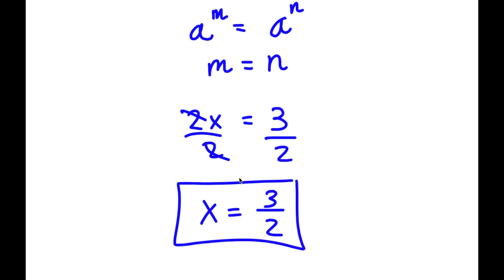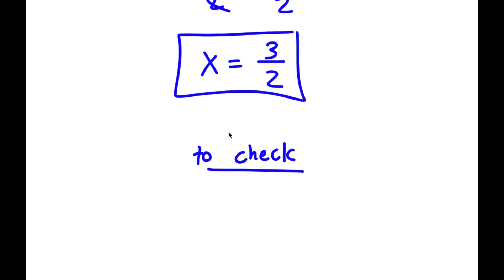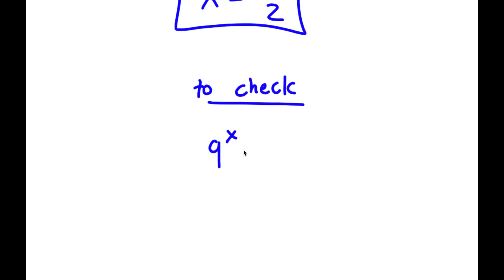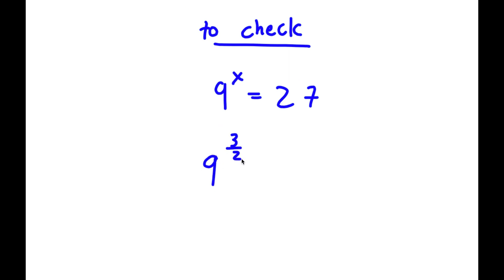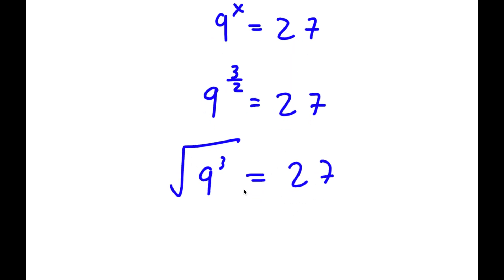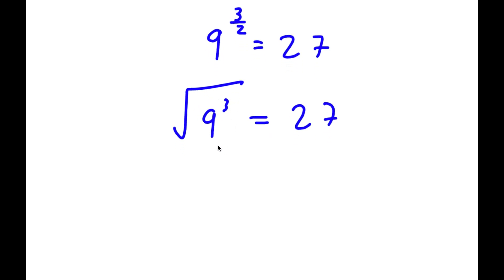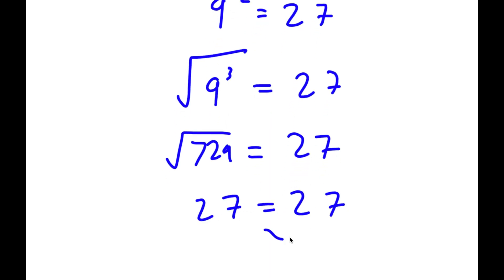This is my answer. Now to check: starting with 9 to the power of x equals 27, substituting x equals 3 over 2 gives 9 to the power of 3 over 2 equals 27. This is the same as the square root of 9 to the power of 3. Now 9 to the power of 3 is 729, and the square root of 729 is 27. So 27 equals 27, confirming the solution is correct.